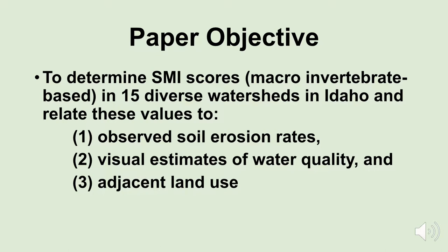If we can relate the benthic macroinvertebrate index score to erosion rates, to visual estimates, and to adjacent land use, we can truly get good values. Observed soil erosion rates, visual estimates of water quality, and adjacent land use are all subjective things, but a benthic macroinvertebrate index score — developed via science and sampling in the field — is not subjective. It's pretty objective.